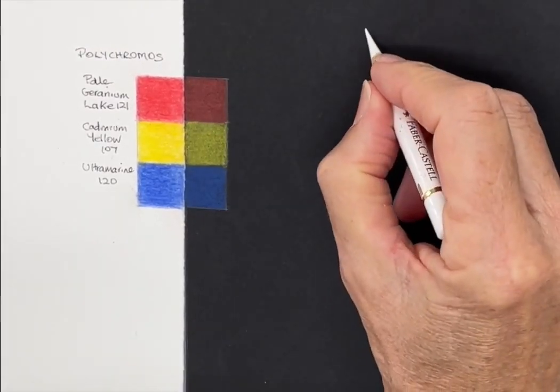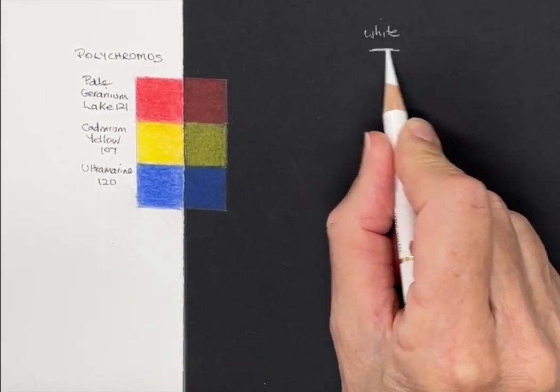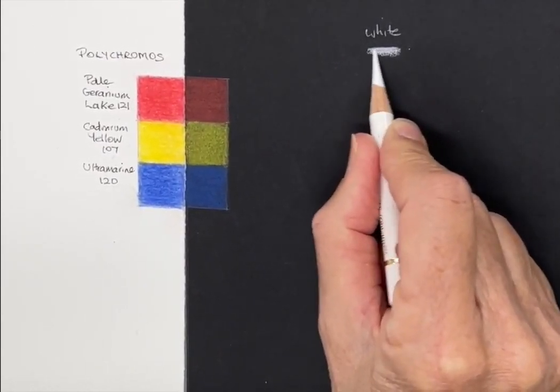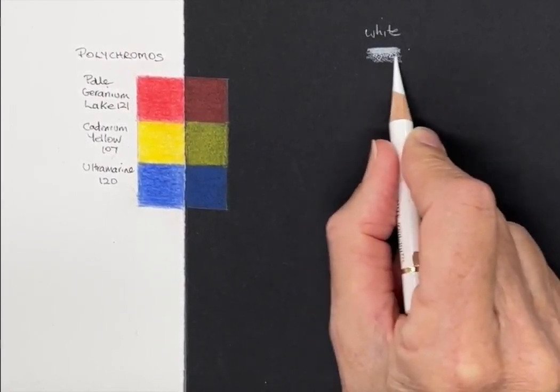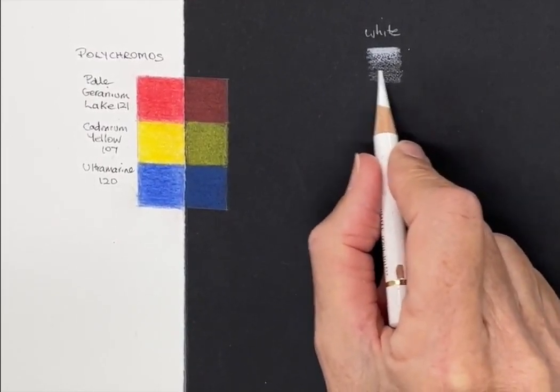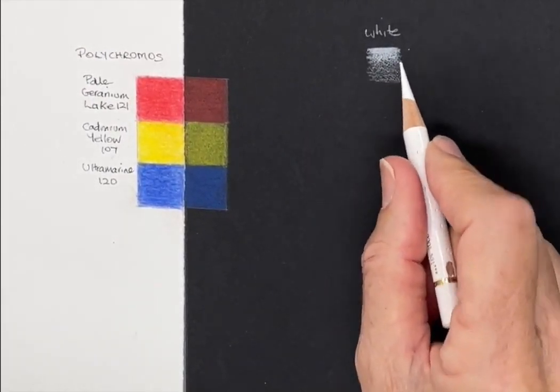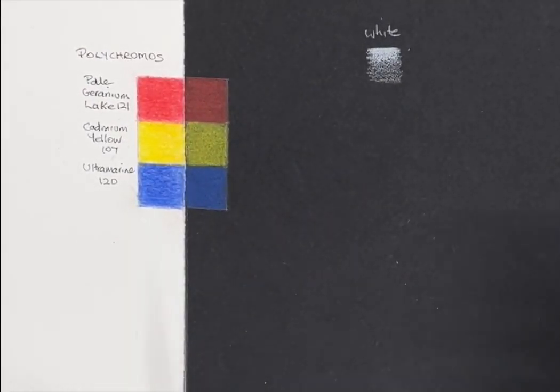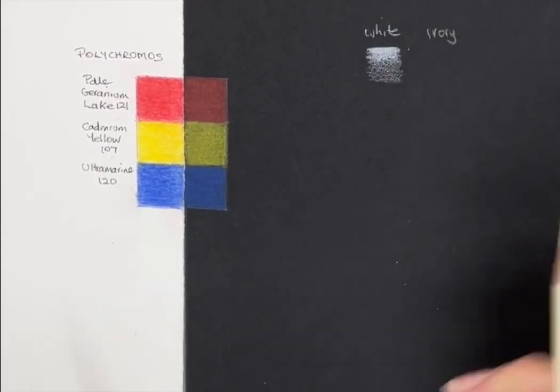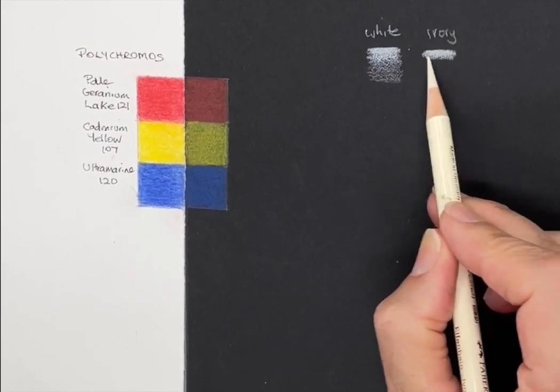Looking at the light colors, this is white Polychromos. You can see that's quite heavy pressure, middle pressure, and then lighter. The interesting thing is when you're working on the black surface, the harder you press, the lighter it goes when using light colors, which is the opposite to using graphite on white paper. It's a total reversal of your process.